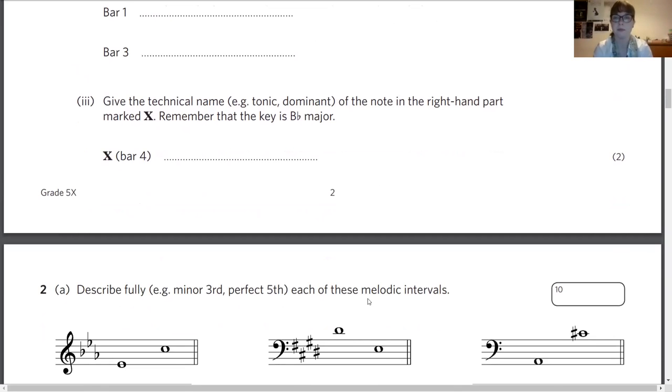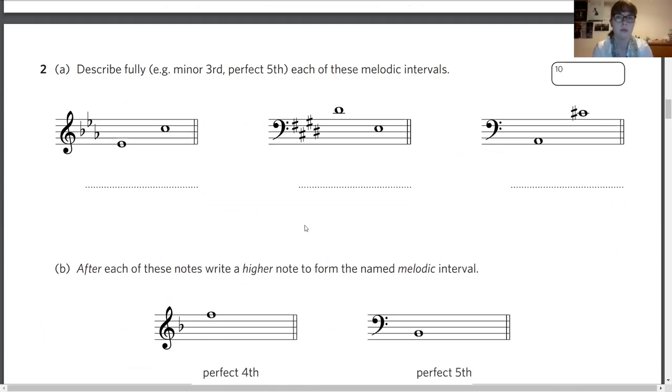Question number two, part A: describe fully, for example minor third or perfect fifth, each of these melodic intervals. Remember, always look at the clef and the key signature, and don't be afraid to just write that down, because it's useful when you're going back to check. Remember there's a very specific method for working through intervals, so if you need to write down the steps again, do, and then you can just follow them. Remember the lower of the two notes is always the more significant one for trying to work out intervals, and then put most of your attention on that, even if it comes second, like it does here.